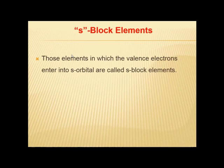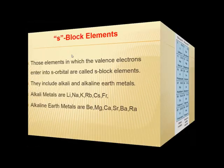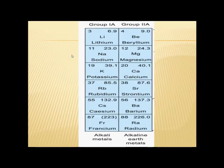Alkaline earth metals are present in the second group of the periodic table. Look at this slide — in this slide, members of Group 1A and 2A can be seen. The reactivity of the elements of both groups increases from top to bottom.